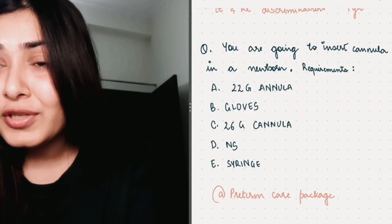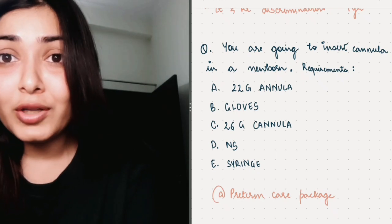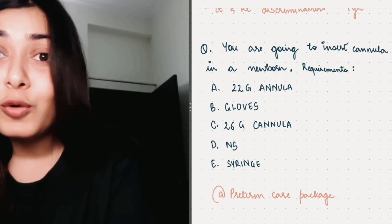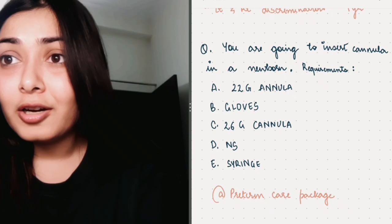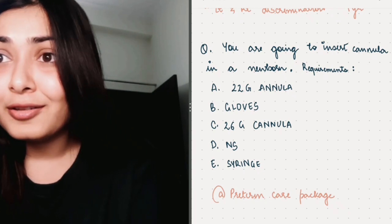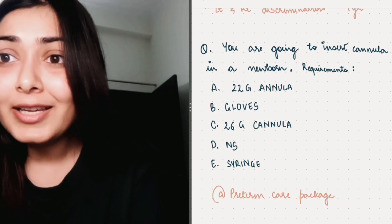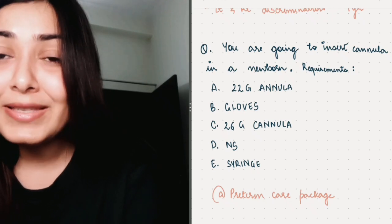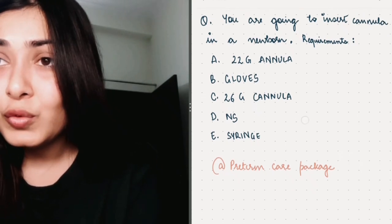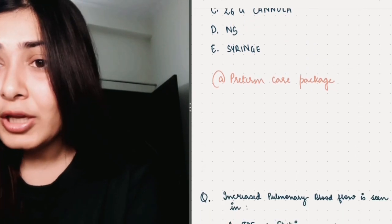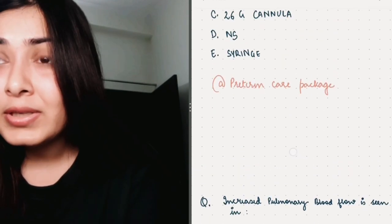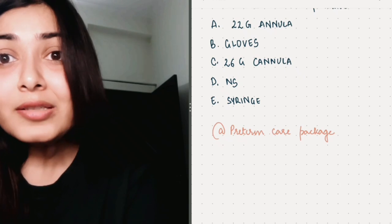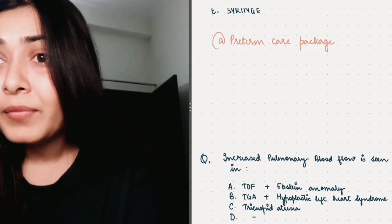All of these options are correct except 22 gauge cannula. That is a bigger cannula, blue colored cannula that should not be placed in a newborn. Their vessels are really tiny and we usually place either a 24 gauge cannula or a 26 gauge cannula in them. So these were all the requirements. You can subscribe to this channel because most of the videos are being asked in the INI-CT exam.